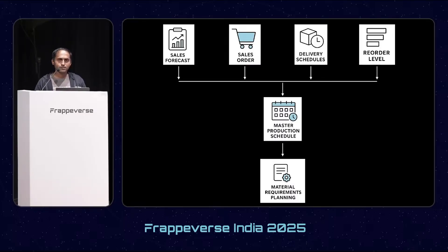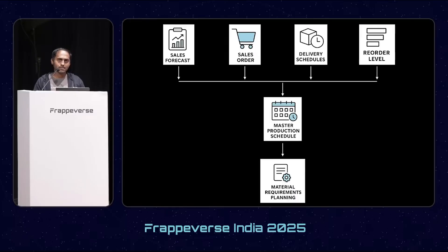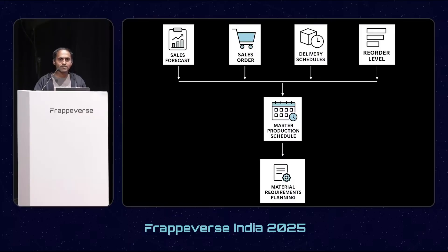We came to know that demand planning is important for MRP, so we introduced a Master Production Schedule document. To make better planning, we required different sorts of data. We already had sales orders and material requests, but we never had sales forecasts and delivery schedules, so we have introduced those as well. Based on this source data, the user has to make a master production schedule and after that run the MRP report.